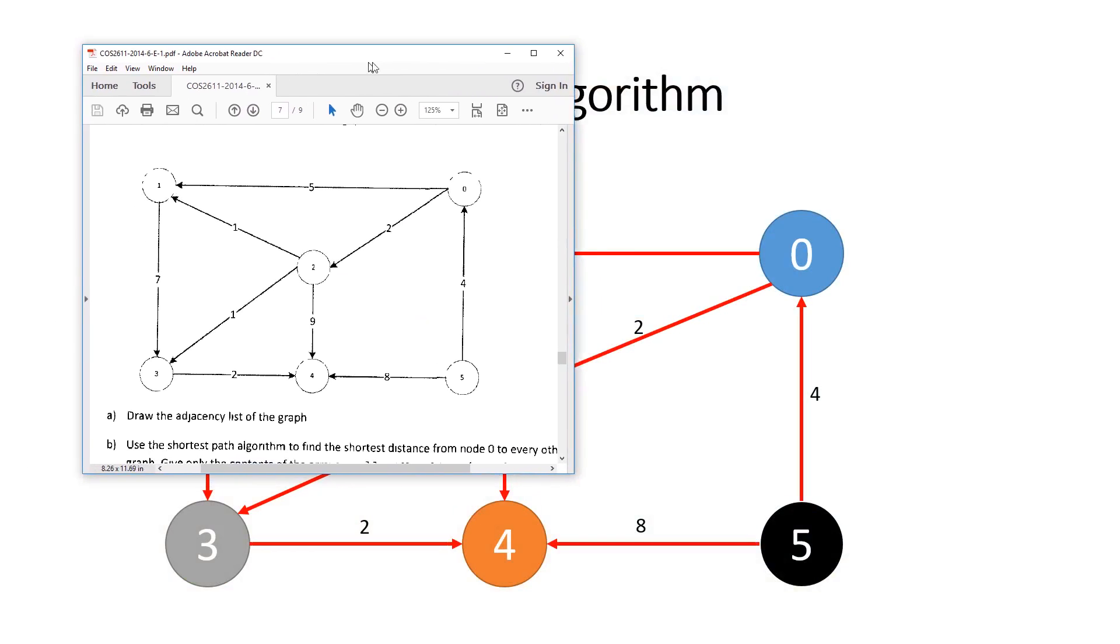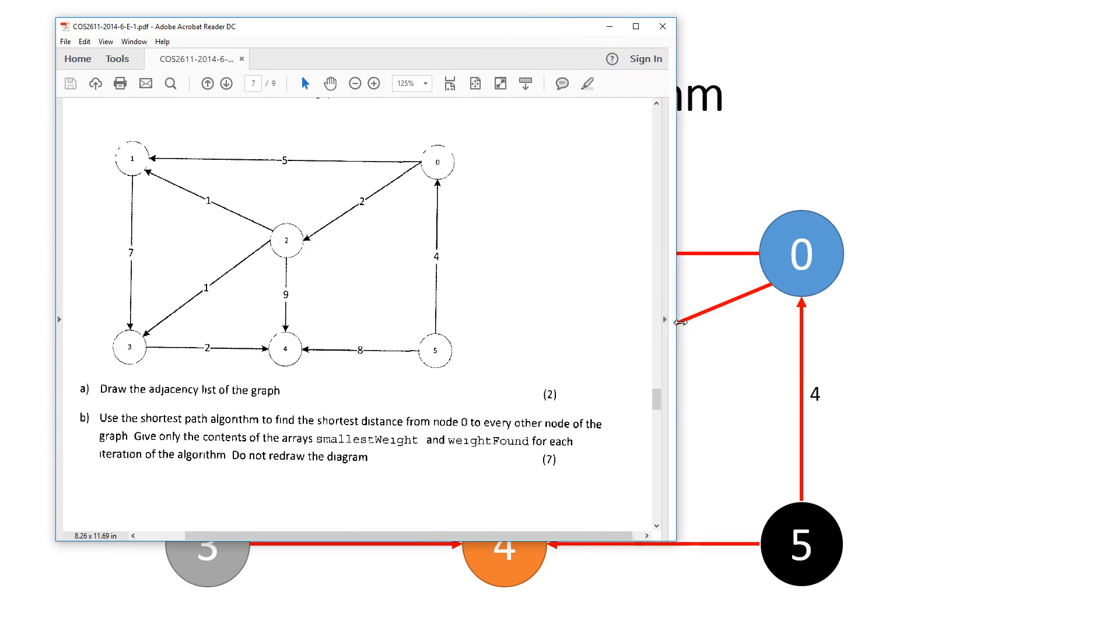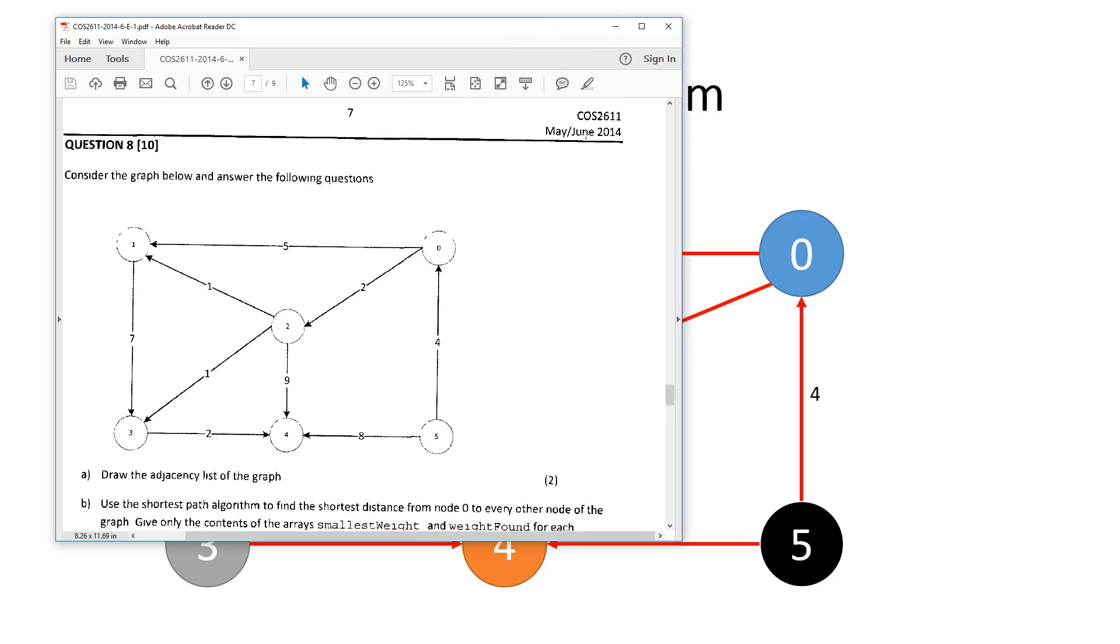I'm going to cover question 8b from the 2014 exam paper, and this is the original diagram that they've provided us with, as you can see May June 2014 COS 2611. It says here use the shortest path algorithm to find the shortest distance from node 0 to every other node of the graph. Give only the contents of the arrays smallest weight and weight found for each iteration of the algorithm. Do not redraw the diagram.